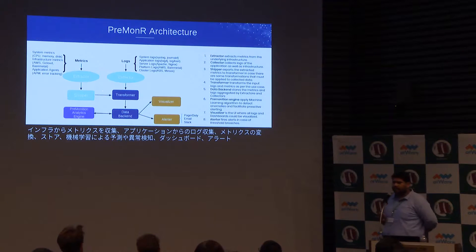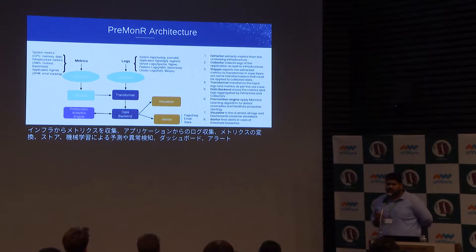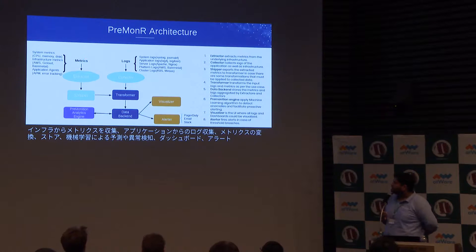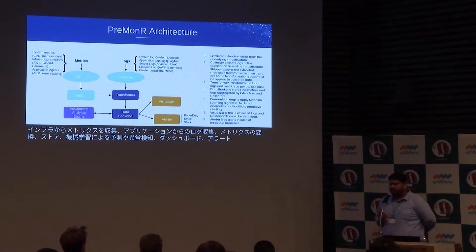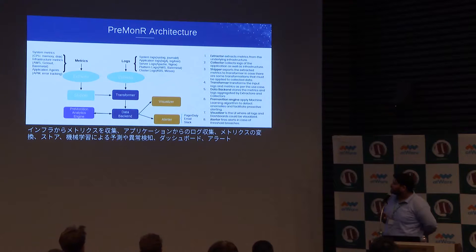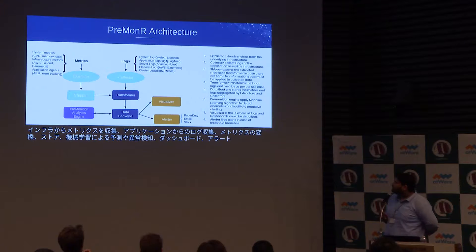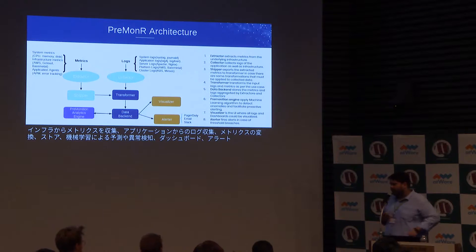Let's take a brief overview of the architecture of Premonar. We basically focus on the collection of two components: metrics and logs. Metrics include system metrics dealing with CPU and memory, infrastructure metrics related to your bare metal or AWS cloud, and application agents and APM for application performance metrics. There is a component called the extractor, which just extracts the metrics being made available to it.